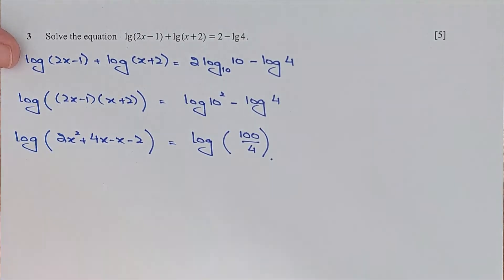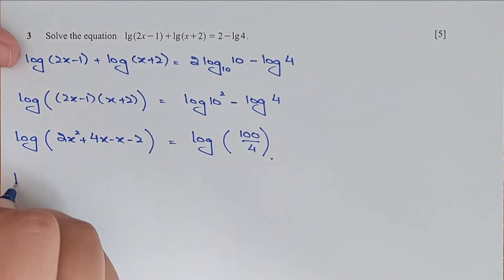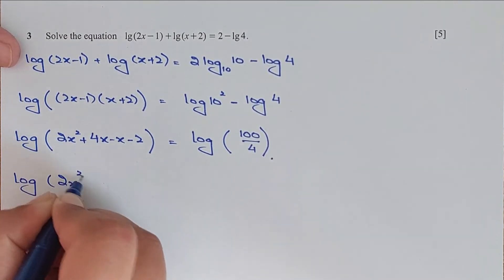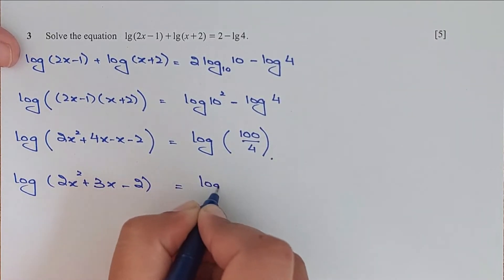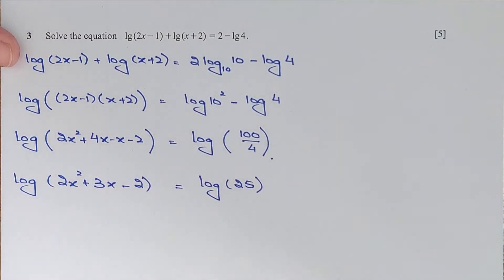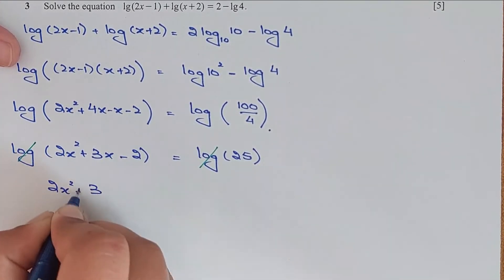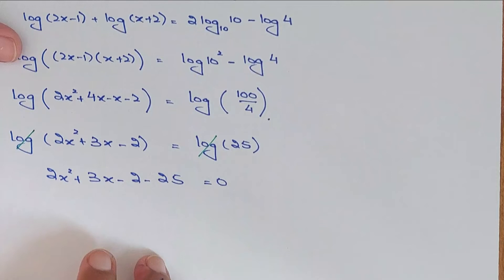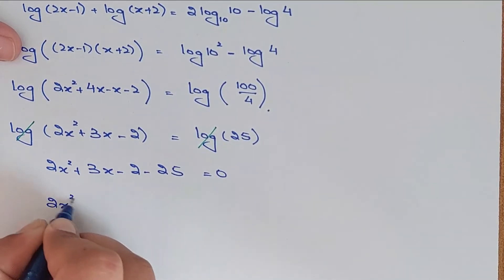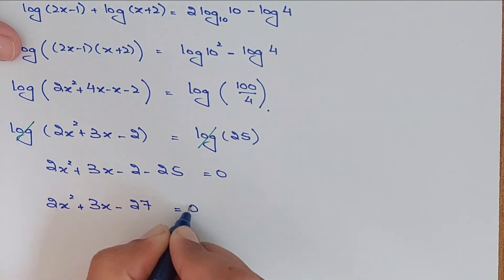So we have log(2x squared plus 3x minus 2) equals log 25. Cancelling the logs on both sides we have a quadratic equation: 2x squared plus 3x minus 2 minus 25 equals 0, which gives 2x squared plus 3x minus 27 equals 0.